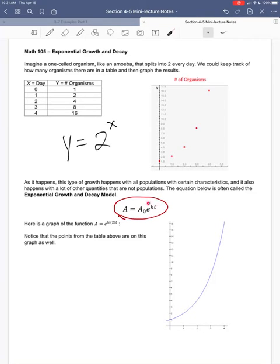We'll talk about what all these letters are on the next page. Now, I've just put in the function a equals e to the natural log of 2 times t. So notice there's nothing in front of the e. That's where my a sub zero is. So this would be a sub zero equals 1. My k would be this natural log of 2, and t is just t.